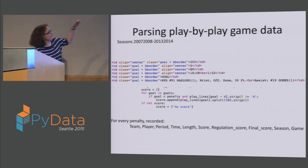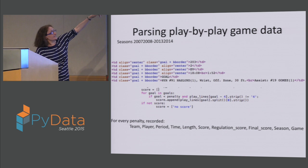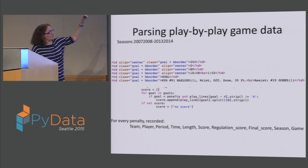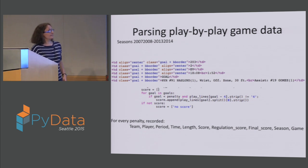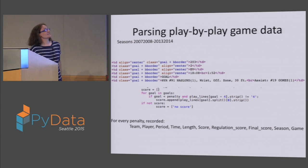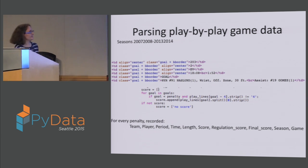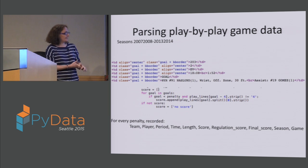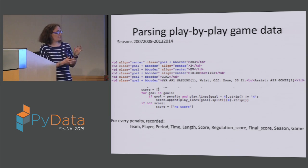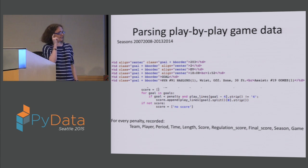For the later-format files, I had to look for a line that said 'PENL' and then get the information I wanted from the lines above and below it, which made it a little more complicated. For goals, the line that says 'goal' doesn't actually have the information I'm interested in, so I had to figure out a pattern for where the goal information really was — lines that had 'FT.' indicating how far the shot was made from, and then a parenthesis indicating a goal was scored. For every penalty I recorded the team, player, period, time, power play length, score at the time, regulation score, final score, season, and game.